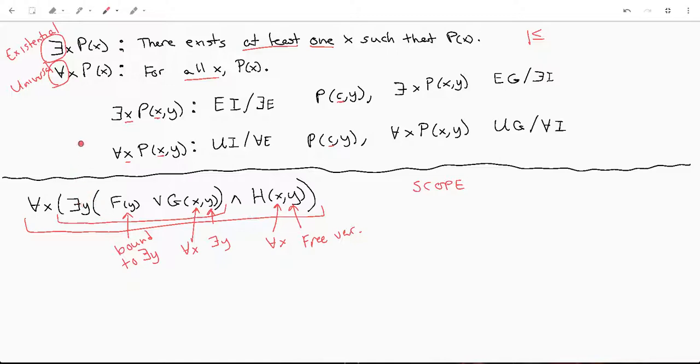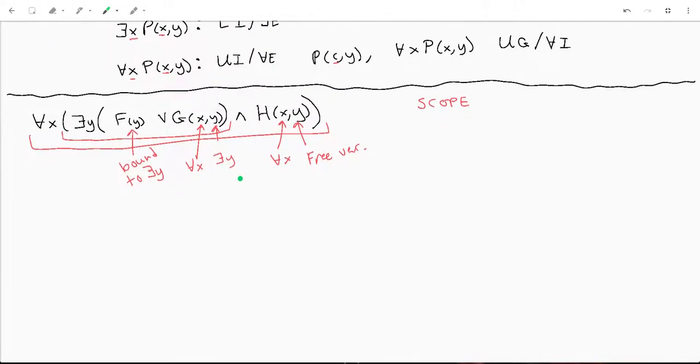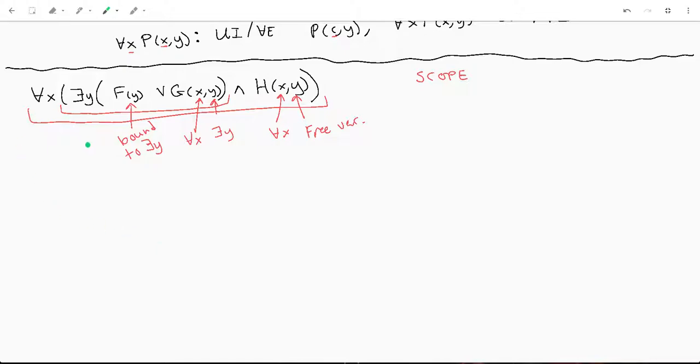The reason we do this is because let's say you're gonna, let's do this in a different color. Let's say you were going to do an elimination or an instantiation of this statement. You would then say let's do c for x and then d for y. It's a pretty common substitution. And we'll do f of d or g of c and d and h of c and y. I think I'm gonna make, let's color code this just for funsies.